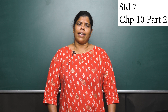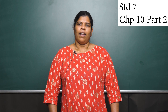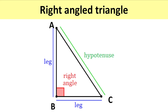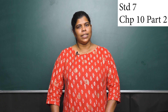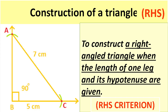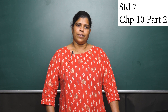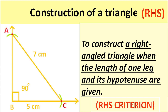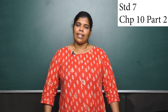Let us take the next construction. In a right-angle triangle, angle B is the right angle. The side opposite the right angle is the longer side, called the hypotenuse. The other two sides — AB and BC — are called the legs. To construct a right-angle triangle when the length of one leg and its hypotenuse are given: the right angle, hypotenuse AC, and one side are given, so it becomes the RHS criterion.